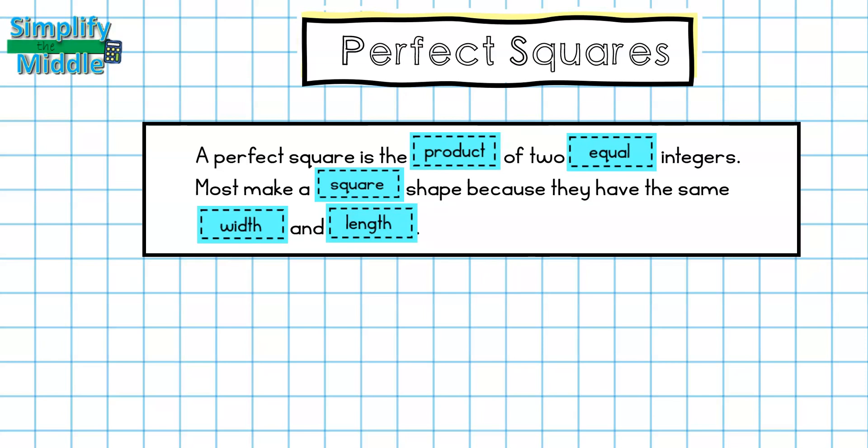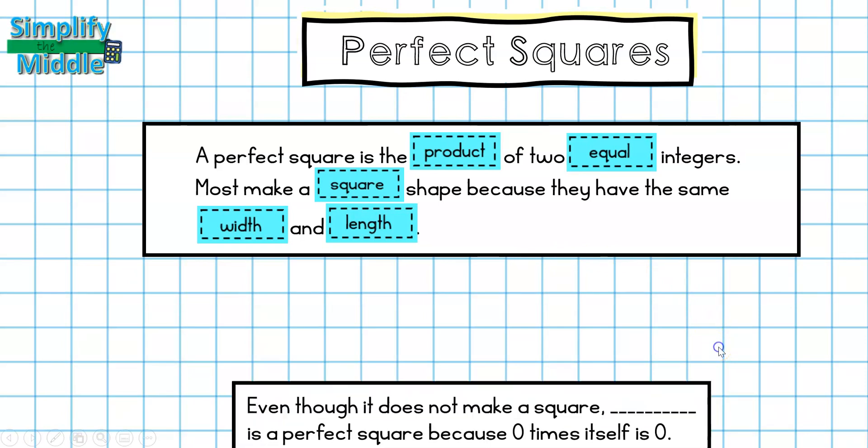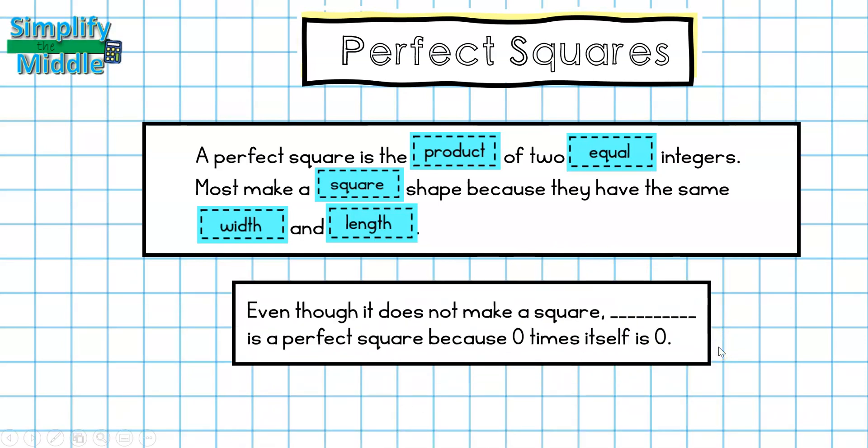There is one more perfect square that does not make a square at all, though. And this is 0. So even though it does not make a square, 0 is a perfect square because 0 times itself is 0.